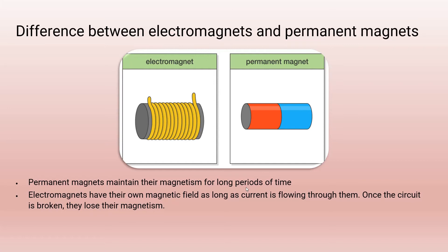The electromagnet and permanent magnet are not the same — there is a difference. In the case of a permanent magnet, they maintain their magnetism for a long period of time. But in the case of an electromagnet, only when the circuit is on does it behave like a magnet. When the circuit is off, it will no longer behave like a magnet and will lose its magnetism. So it behaves like a magnet only when the circuit is closed.